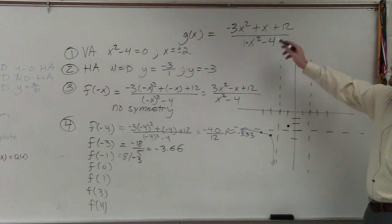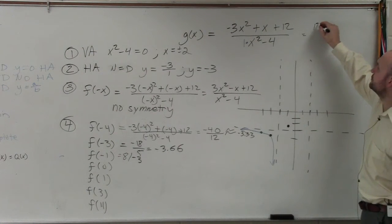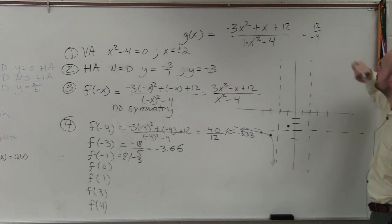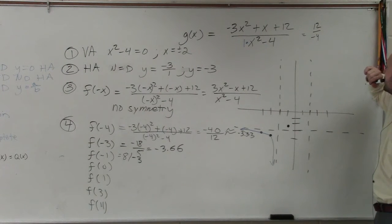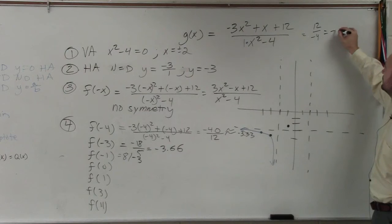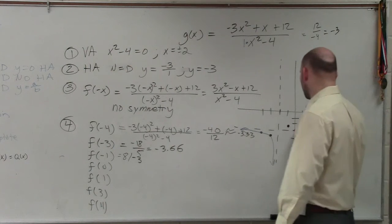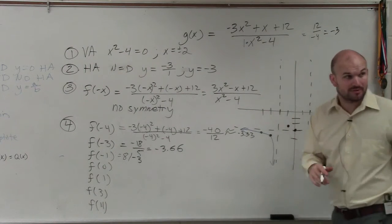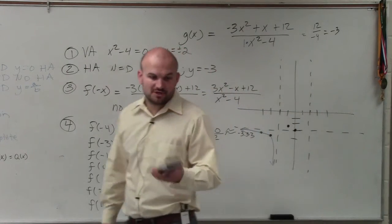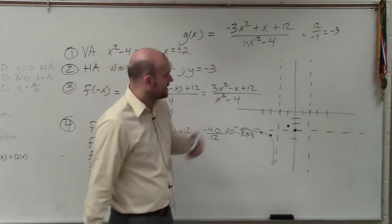Let's check in what 0 is. That's going to be 12 over negative 4. So at 0, I'm here. I'm actually on the asymptote, which is OK for a horizontal asymptote.